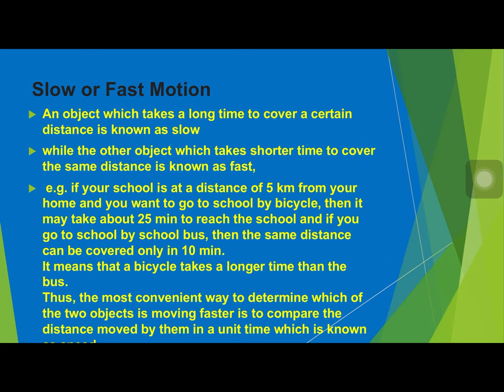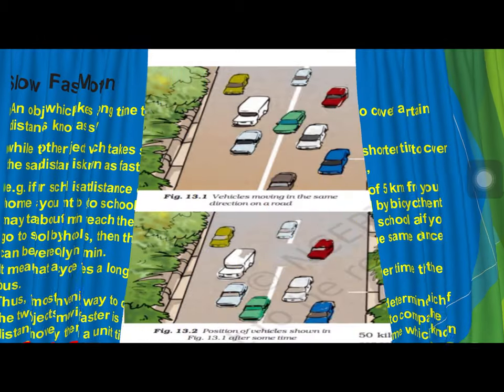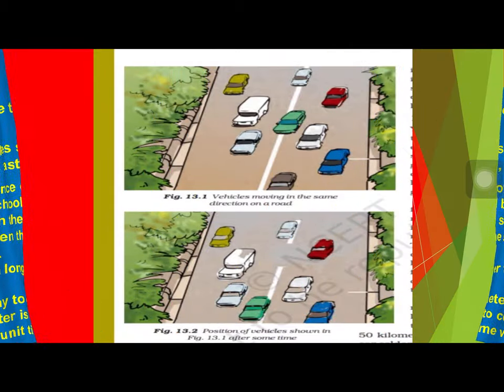Next is slow or fast motion. When an object takes a long time to cover a certain distance, it is known as slow motion. When it takes a shorter time, it is fast motion. For example, if your school is 5 km from home and you go by bicycle it takes 25 minutes, but by school bus the same distance is covered in only 10 minutes — so the bicycle is slow motion compared to the bus.